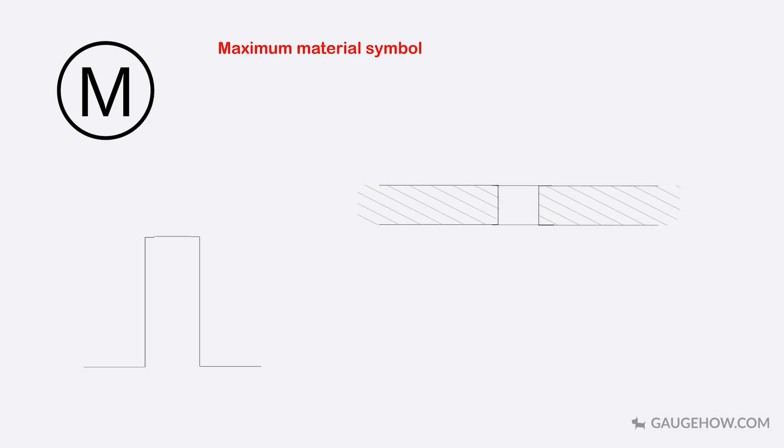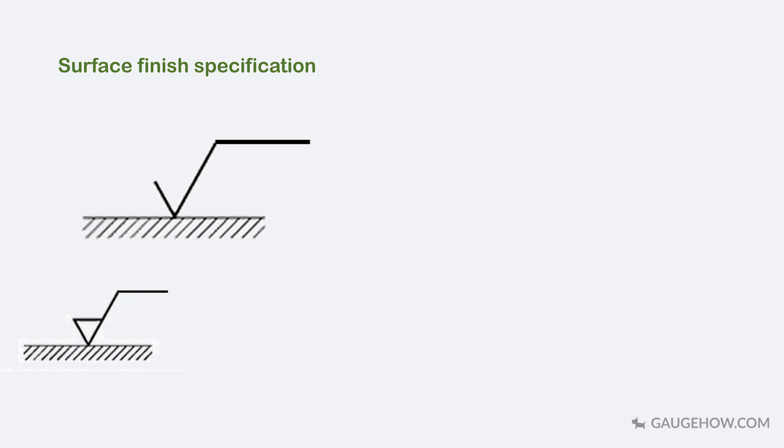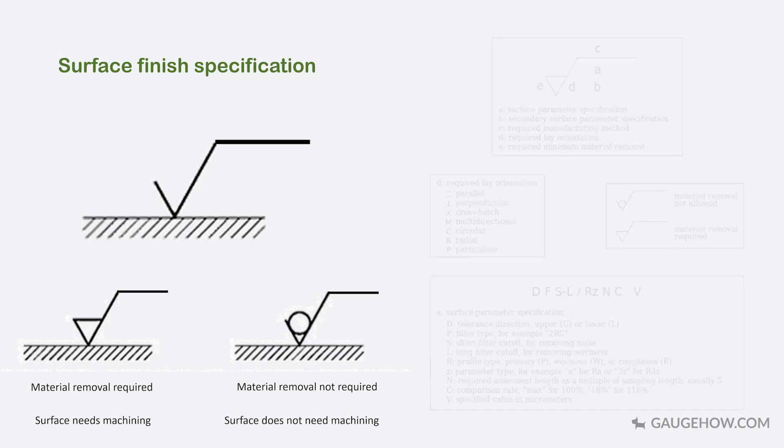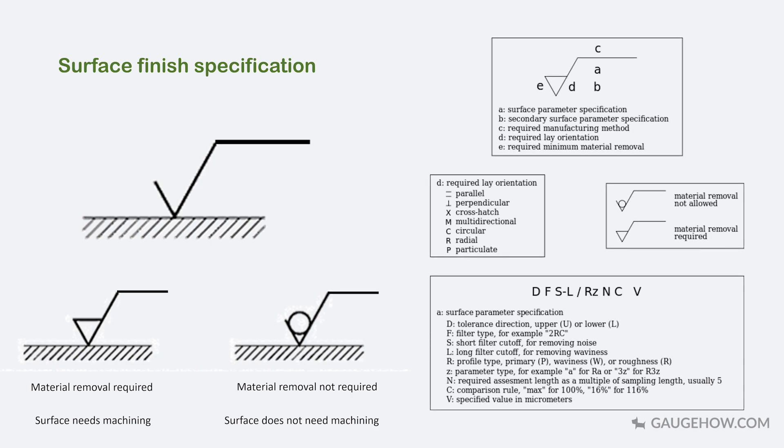A symbol is added to the drawing with necessary information which specifies how the workpiece must be formed and finished. This symbol is the basic symbol of surface finish specification. It specifies the surface which needs surface finishing. Here, the presence of top line on the triangle indicates that material removal is required. If the line is replaced by a small circle, then material removal is not required. In other words, first symbol shows that machining is done on the surface and the second one forbids it. A surface finishing symbol specifies information like surface parameter specification, layer orientation and required minimum material removal.